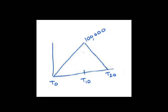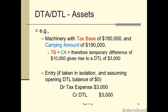It gets even worse if the assets themselves are actually increasing in value — the cost of a new one is higher than the previous one, because it's just going to inflate even further. So these actually, arguably, never go away, which is one of the issues we'll come back to at the end of the class. So we have a temporary difference, and we multiply that temporary difference by 30%, which gives you $3,000.